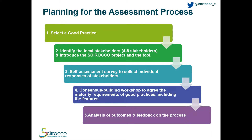To conduct the assessment process, we recommend the following set of steps. First, selecting a good practice to assess. Then identifying four to eight local stakeholders and introducing them both to the Sirocco project and the Sirocco tool. In the third step, asking the stakeholders to use the Sirocco tool to fill in self-assessment surveys individually to record their individual opinion about the maturity requirements of the good practice. In the fourth step, as also supported by the Sirocco tool, conducting a consensus building workshop to bring stakeholders together and reach an agreement about the maturity requirements of the good practice, as well as the features that the good practice depends on. And finally, analyzing the outcomes and providing feedback on the process.